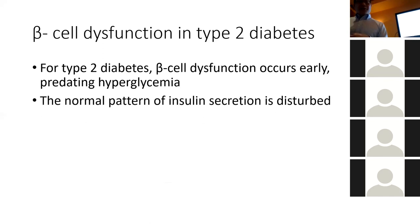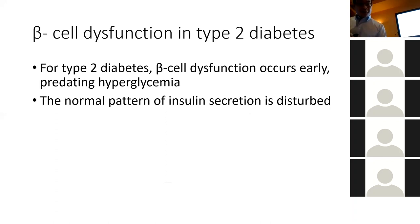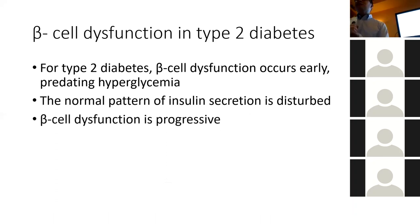The normal pattern of insulin secretion is disturbed in type 2. There are phases in insulin secretion — I'll get to that later. Beta cell dysfunction is progressive and usually gets worse over time.